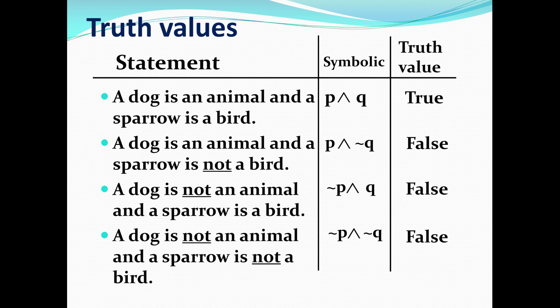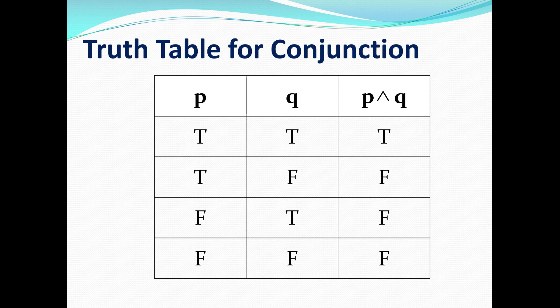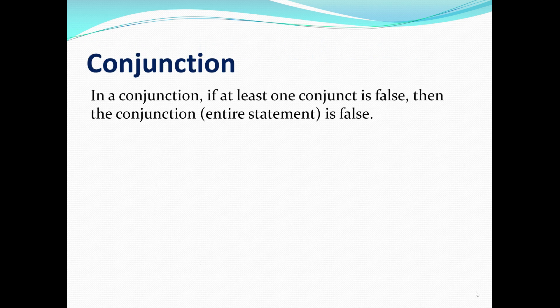This is the truth table for conjunctions. As a header we put P, Q, and then P and Q. If both are true, as shown in the first row, then P and Q is true. If one or both are false, then the statement is false. Here's the summary for conjunction: if at least one conjunct is false, then the conjunction — the entire statement — is false. By conjunct, we mean either P or Q.